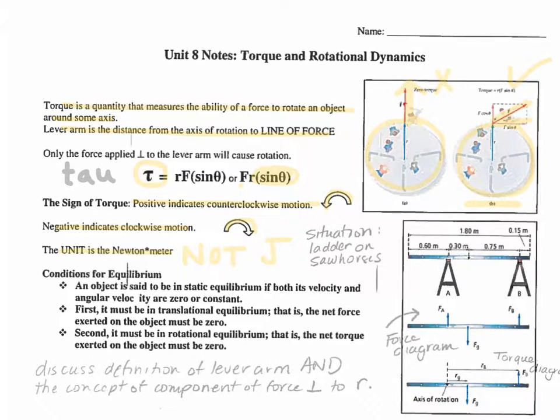So now what we really have here is a third condition for equilibrium. We see that there are multiple ways that an object can accelerate: it can accelerate in a line in a linear fashion, or it can rotate. An object is said to be in static equilibrium if both its velocity and angular velocity are zero or constant. It must be in translational equilibrium, meaning the net force must be zero, and also in rotational equilibrium, meaning the net torque must be zero.